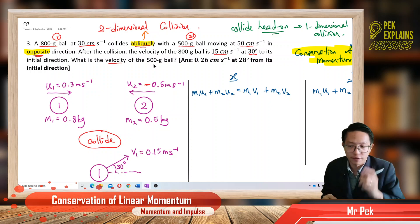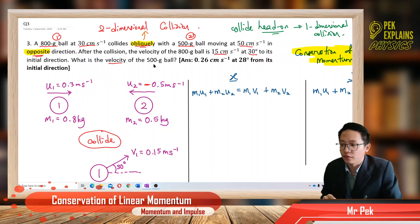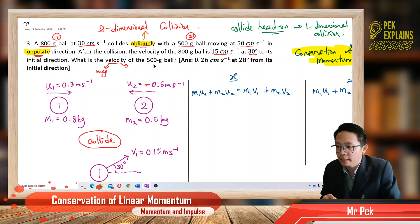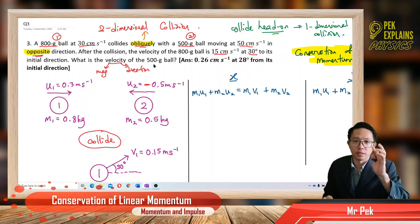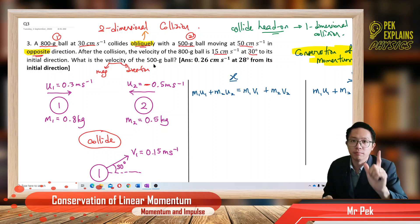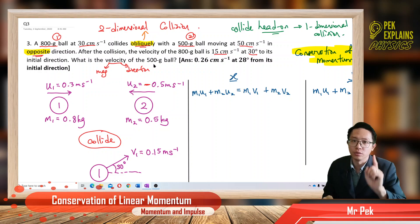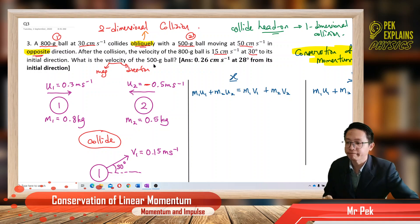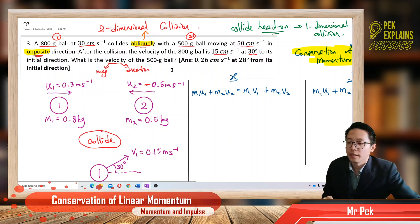For velocity, it's a vector. For a vector, you need to give two things: you need to find the magnitude and you need to find the direction. For a vector, you must give both magnitude and direction. If you don't include the direction, you lose one mark.